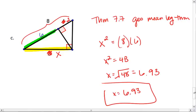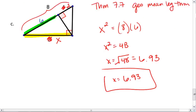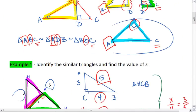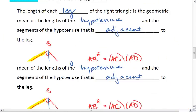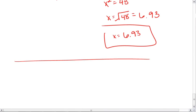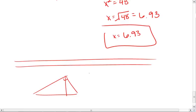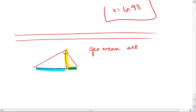And there's our final answer. So again, the big ideas here are knowing our similar triangle, but then knowing these ratios. We have the geo mean altitude, which tells us the altitude is the mean of the two parts of the hypotenuse.